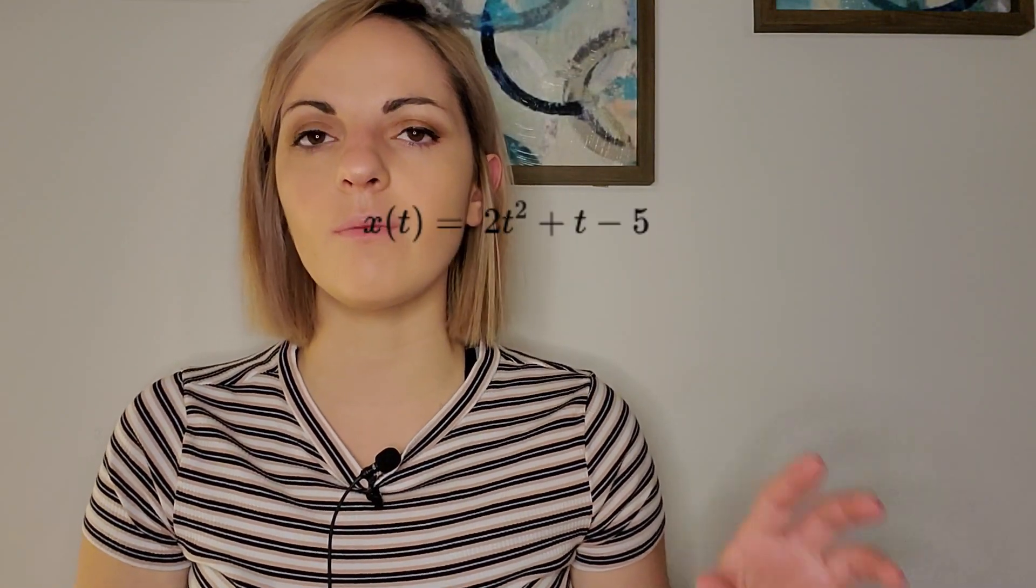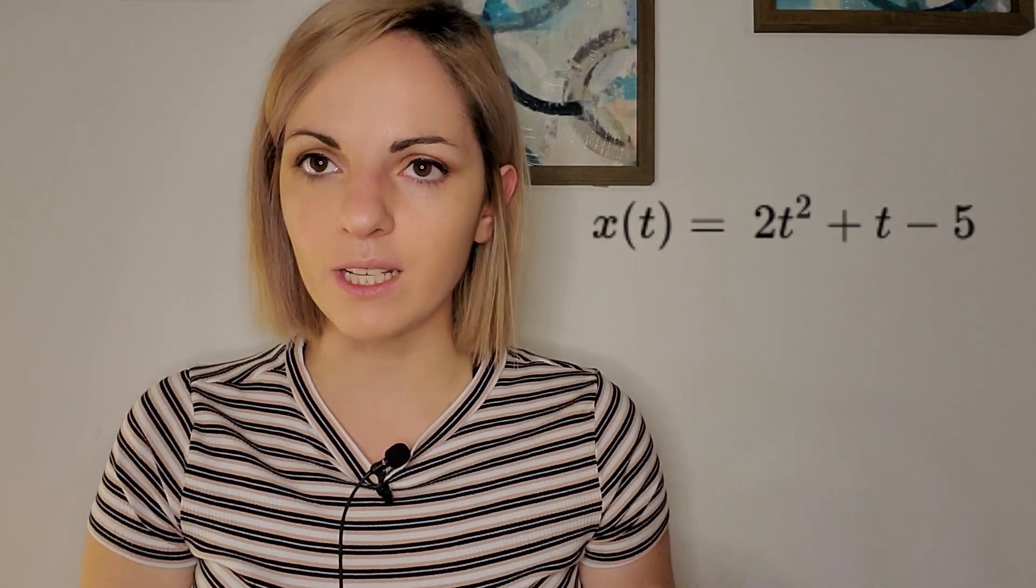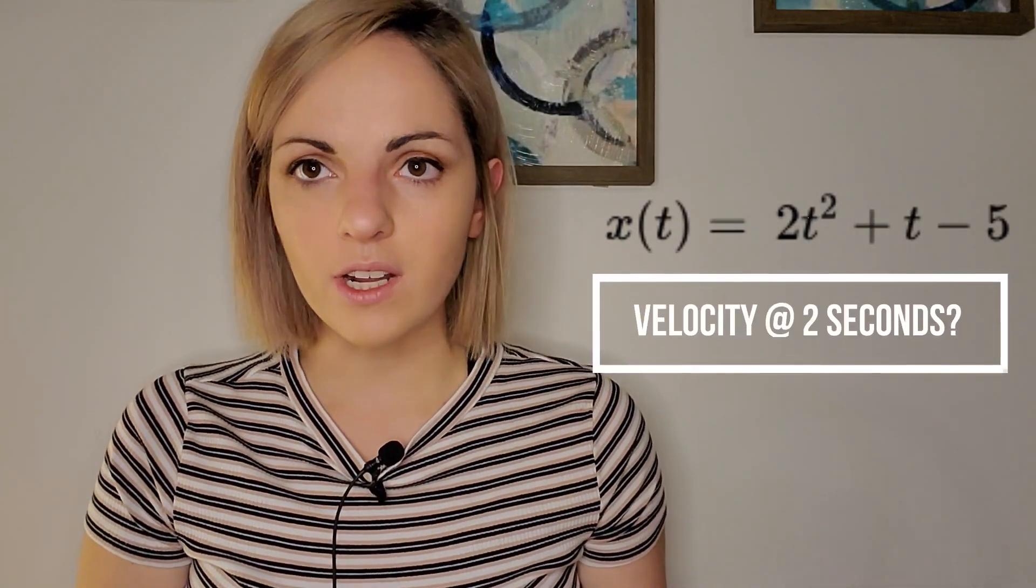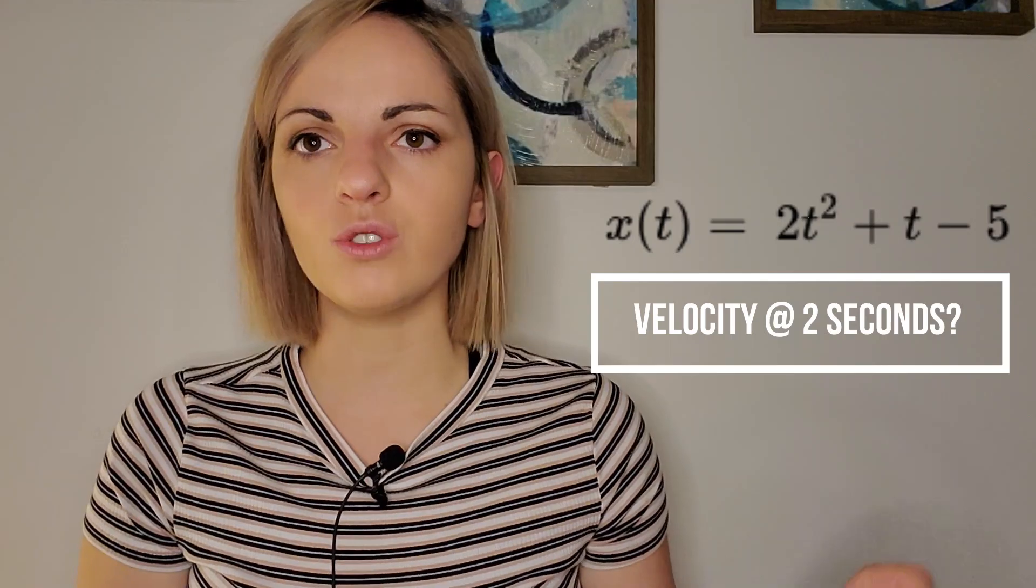Our question is, a particle moves along a straight line with the position given by the formula x(t) equals 2t² plus t minus 5. What is the instantaneous velocity at t equals 2 seconds?